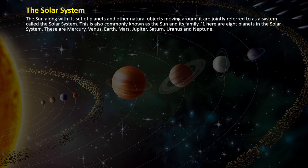The sun along with its set of planets and other natural objects moving around it are jointly referred to as the solar system, also commonly known as the sun and its family. The solar system includes the sun, eight planets, asteroids, meteors and comets.